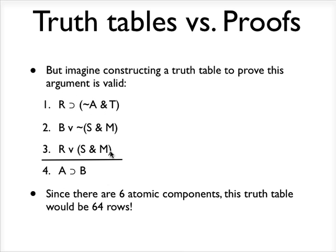But imagine we are trying to prove that this argument is valid, three premises and a conclusion. How many atomic components do we have here? Well, there's an A, a T, an R, a B, an S, an M. That's six atomic components. And if you have six atomic components, that's going to come out to a 64-row truth table.